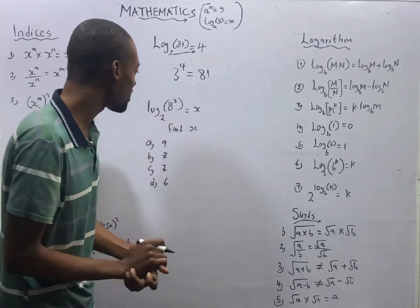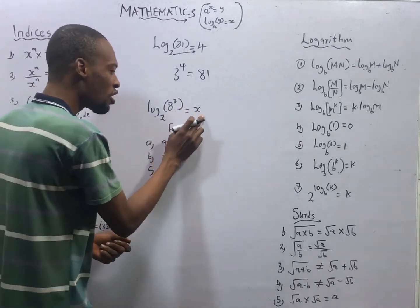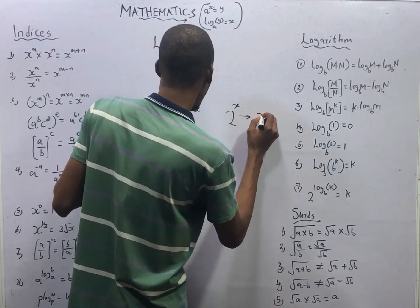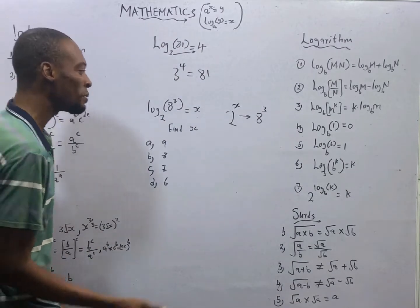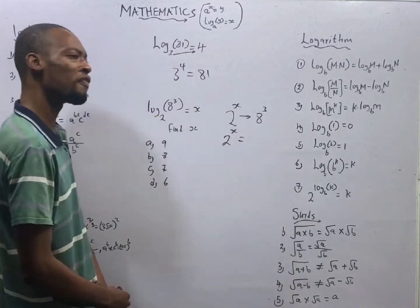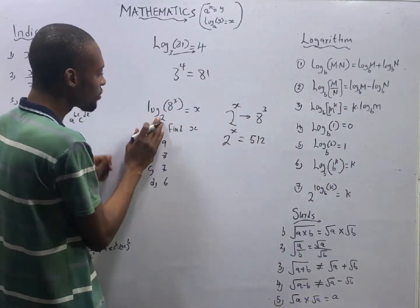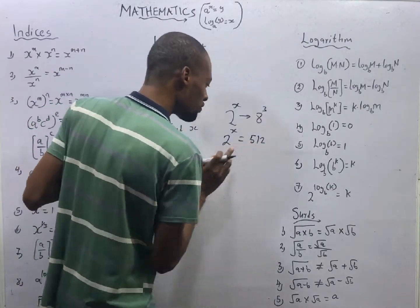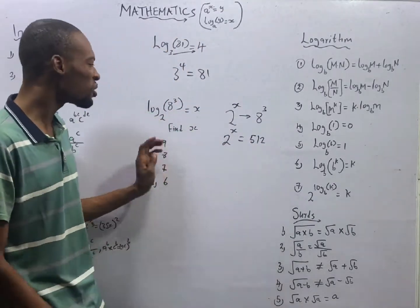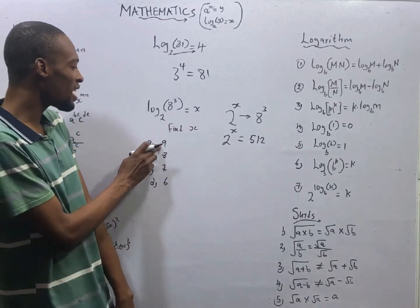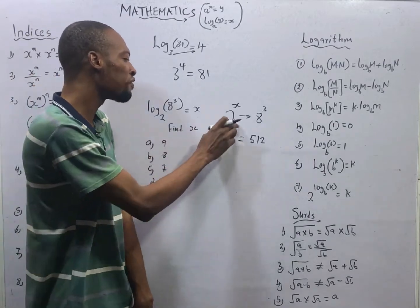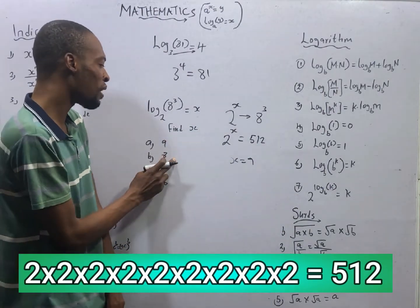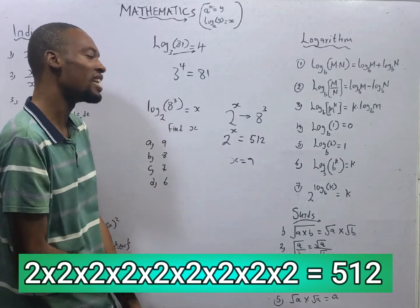When you are given a question like: log of 8 raised to the power of 3, to base 2, equals s — find s. It means 2 raised to the power of s equals 8 raised to the power of 3, which is 512. So 2 raised to the power of s equals 512. Then just go to the options: if option A says s = 9, check whether 2 raised to the power of 9 gives 512. If yes, s equals 9. If not, cancel and check the next option.